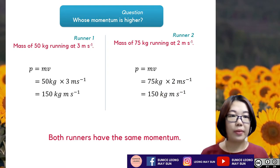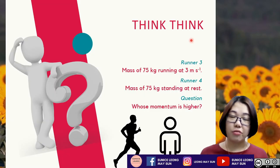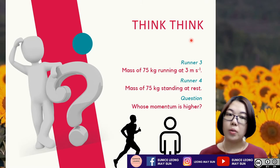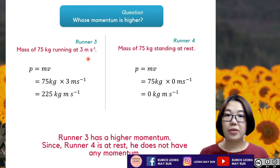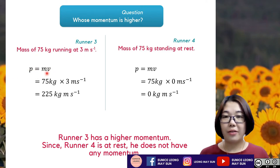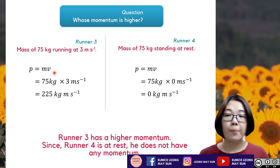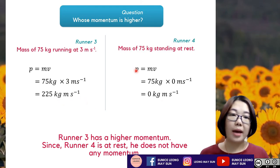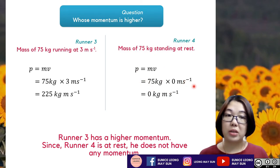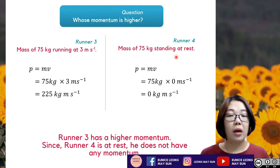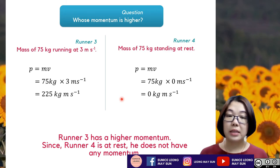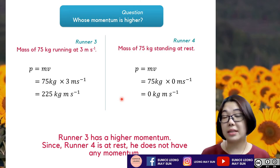Let's try another question. Runner three is 75 kg running at 3 meters per second, while runner four has a mass of 75 kg standing at rest. Whose momentum is higher? Using P equals MV: runner three — 75 kg multiplied by 3 m/s gives 225 kg·m/s. Runner four — 75 kg multiplied by 0 m/s gives 0 kg·m/s. So runner three has higher momentum. Since runner four is at rest, it does not have any momentum as it has no velocity.